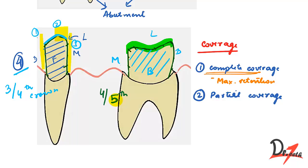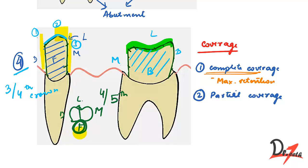We also have the reverse 3/4 crown. The 3/4 crown leaves the facial surface unprepared, so the reverse of that is leaving the lingual surface unprepared. The reverse 3/4 crown is indicated when the abutment has severe lingual inclination — in that case, the reverse 3/4 crown is more conservative, meaning less tooth structure is cut compared to the standard 3/4 crown.